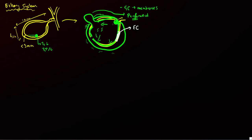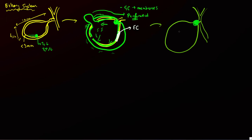With a stone impacted in the gallbladder neck or cystic duct, you can get Mirizzi syndrome. Not only do you get gallbladder distension, but you also get actual distension of the common hepatic duct and intrahepatic bile ducts, while the extrahepatic tree appears normal. This pattern of dilatation is known as Mirizzi syndrome.